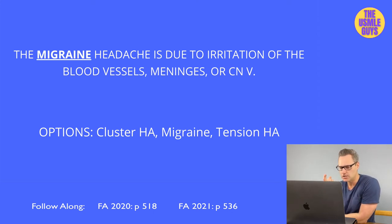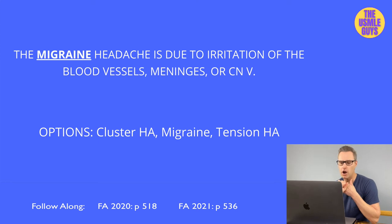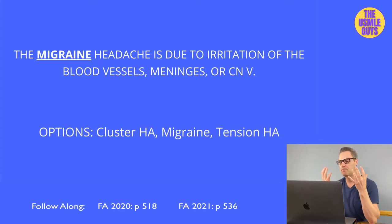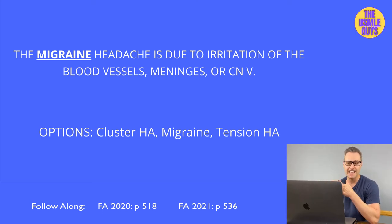Acutely, we can manage migraines with NSAIDs, though triptans are more likely to help. Antiemetics like metoclopramide or prochlorperazine help with nausea. Triptan medications like sumatriptan are 5-HT1B/1D agonists that work by inhibiting trigeminal nerve activation, preventing vasoactive peptide release, and inducing vasoconstriction.